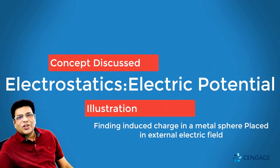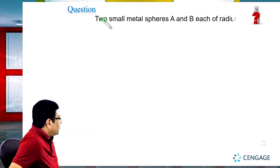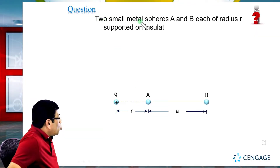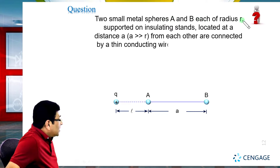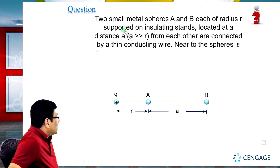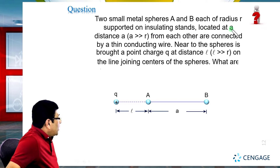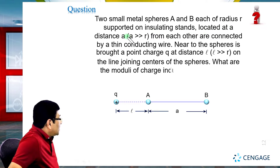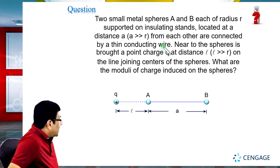Let us move to the illustration section. In this illustration we are given two small metal spheres A and B, each of radius small r, supported on insulating stands, located at a distance small a from each other — where small a is much greater than the radius small r — and connected by a thin conducting wire.